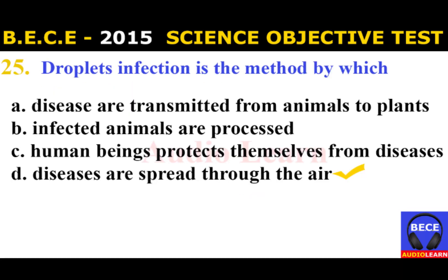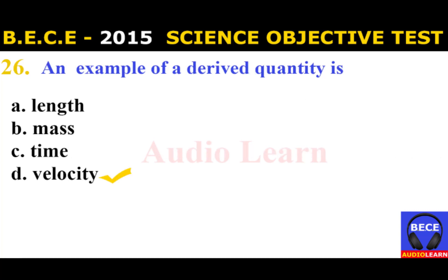Number 25: Droplet infection is the method by which A. Diseases are transmitted from animals to plants, B. Infected animals are processed, C. Human beings protect themselves from diseases, D. Diseases are spread through the air. The answer is D. Diseases are spread through the air.